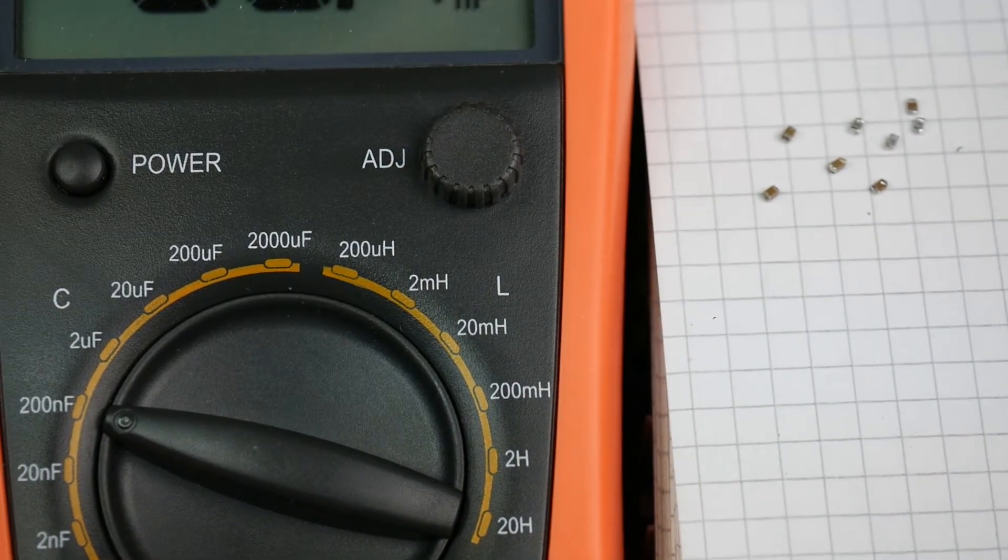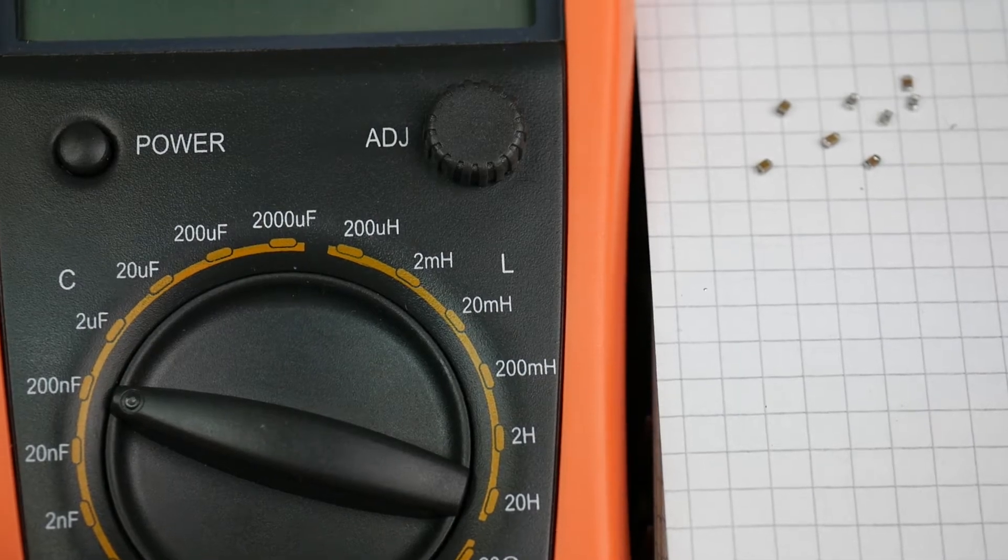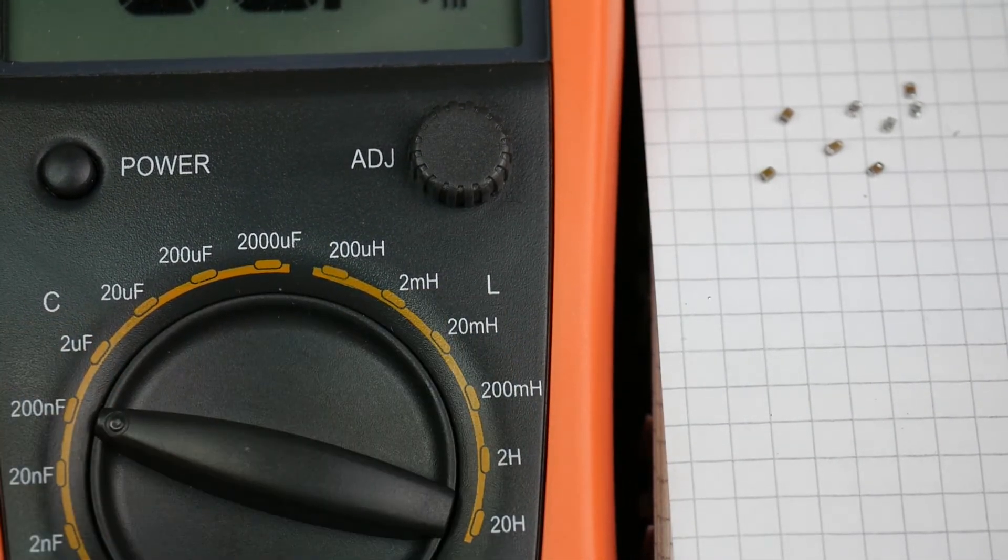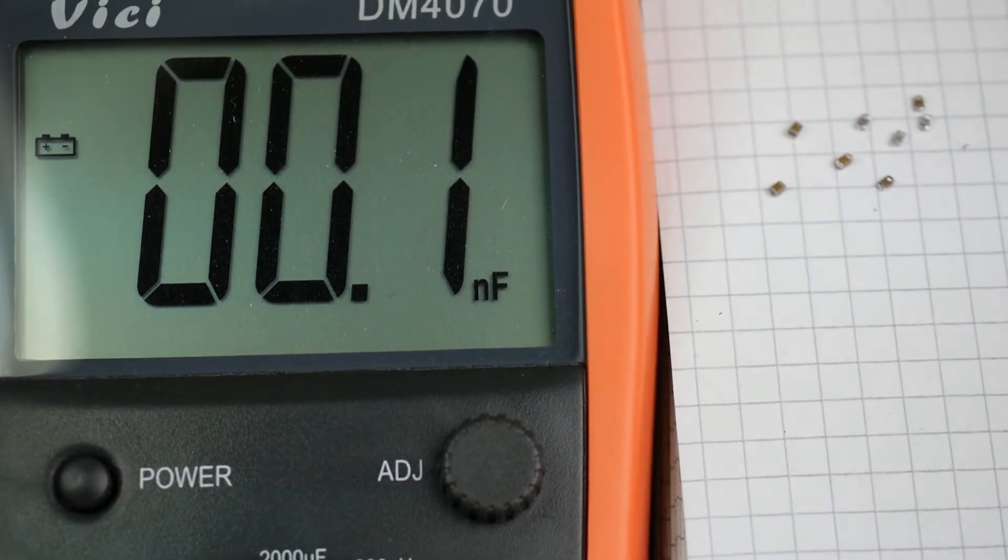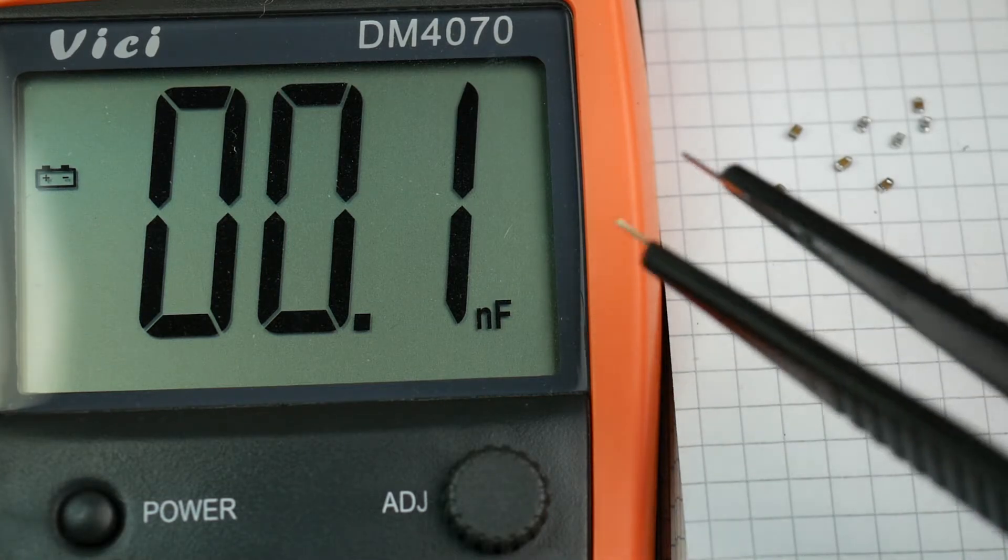It's not auto-ranging. You have to set the range manually. So, I've set the range there to 200 nF in C for capacitance. This is L over here for inductance, and down the bottom with ohms. Let's get that lined up so that we can see the display and the component at the same time. And the secret weapon, again, is a tweezer.